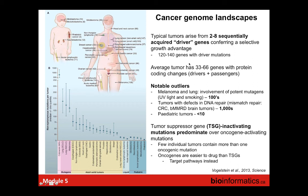However, these are not the only mutations in a tumor. On average there are about 33 to 66 genes with protein-coding changes—drivers plus passengers. Notable outliers include melanomas and lung cancers with mutations in the hundreds, associated with potent mutagens like UV radiation and smoking. These are surpassed only by tumors with defects in DNA mismatch repair, such as colorectal cancers and germline mismatch repair-deficient brain tumors.